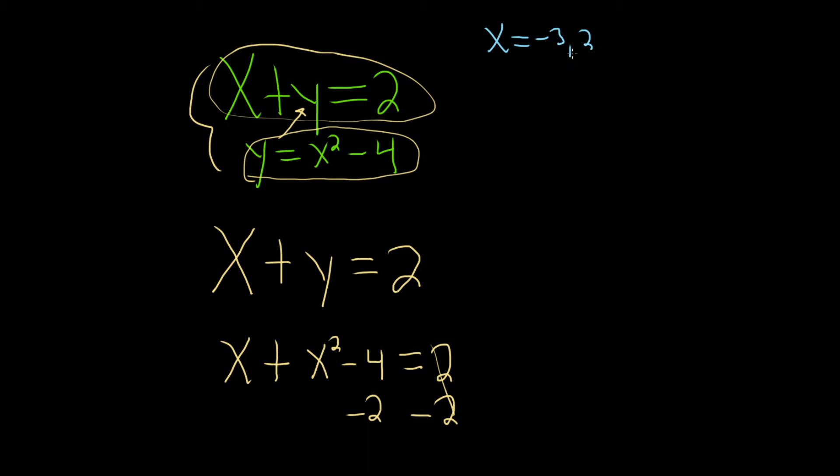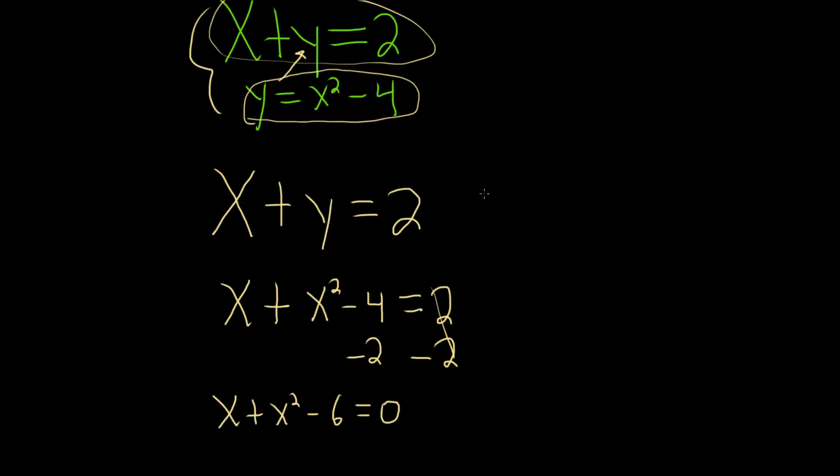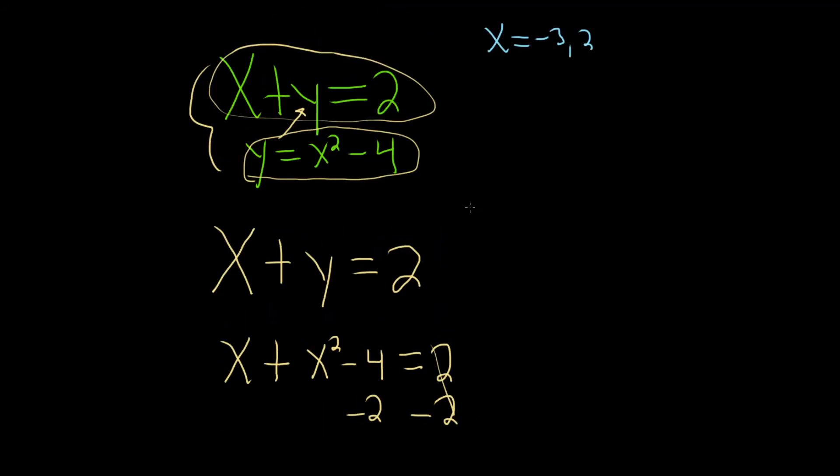So now what you're supposed to do is you're supposed to take these and plug them into either equation, and then you find the y values. So you're supposed to do each one one at a time. So when x equals negative 3, let's do the first one. It's really important to break it up like this.